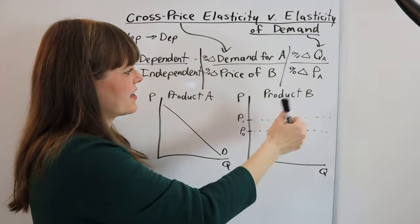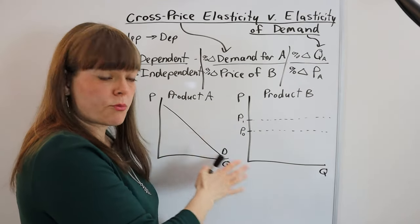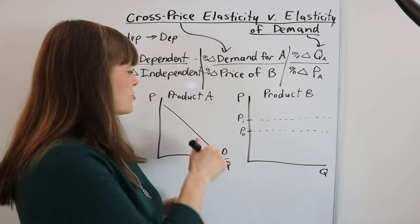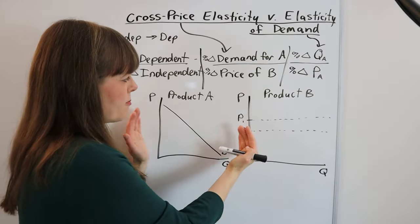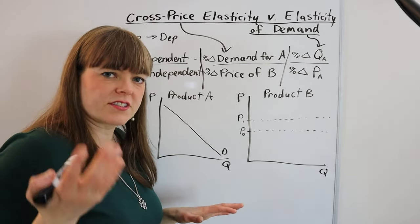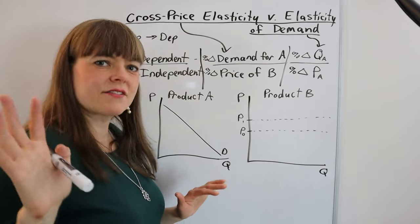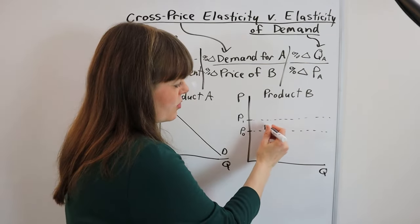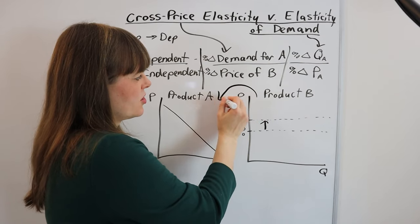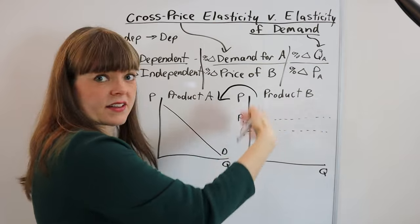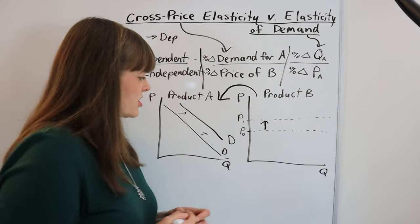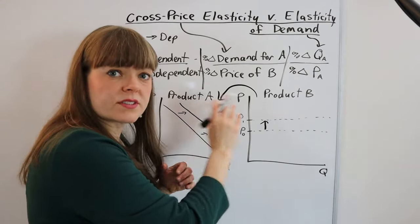Let's think about cross-price elasticity between product B and product A, where product A is the supply-demand curve model you're focused on. You're interested in how many tennis shoes people buy when the price of tennis shoes goes up and down. But that might depend on the price of other products, like sneakers. Sneakers aren't exactly the same as tennis shoes, but they're kind of substitutes. So if the price of sneakers goes up by 20%, people might switch from sneakers to tennis shoes, and the demand curve for tennis shoes will shift out. How much it shifts out depends on how close substitutes these two products are.